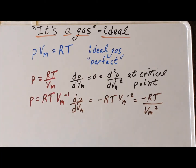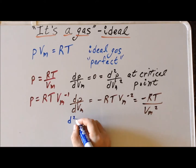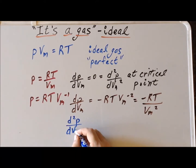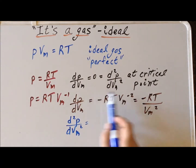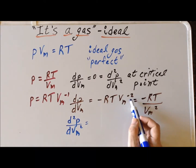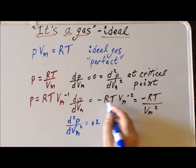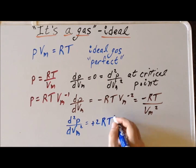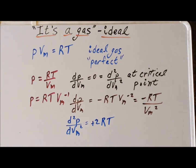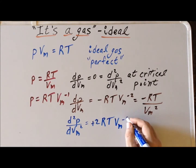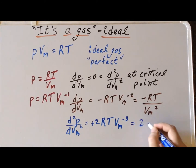To find the second derivative of the pressure with respect to the molar volume, we use the fact that the second derivative is the first derivative of the first derivative. We differentiate our first derivative expression again: the exponent is minus two and there is a minus one in front, which multiply to give plus two. R and T remain as constants, and decreasing the exponent of Vm by one gives Vm to the minus three. This can be written more traditionally as two RT divided by Vm cubed.